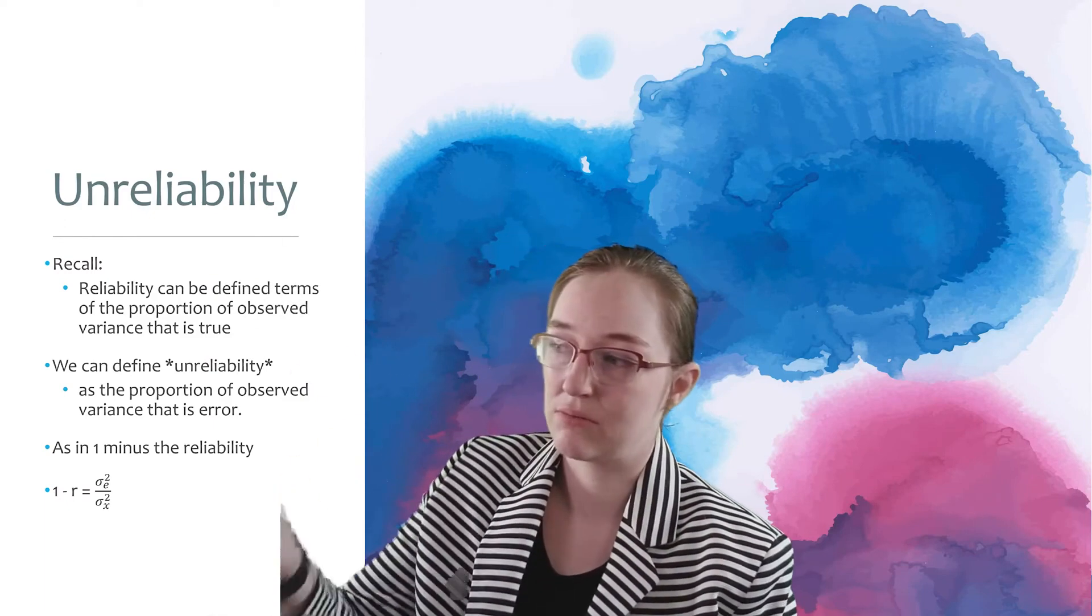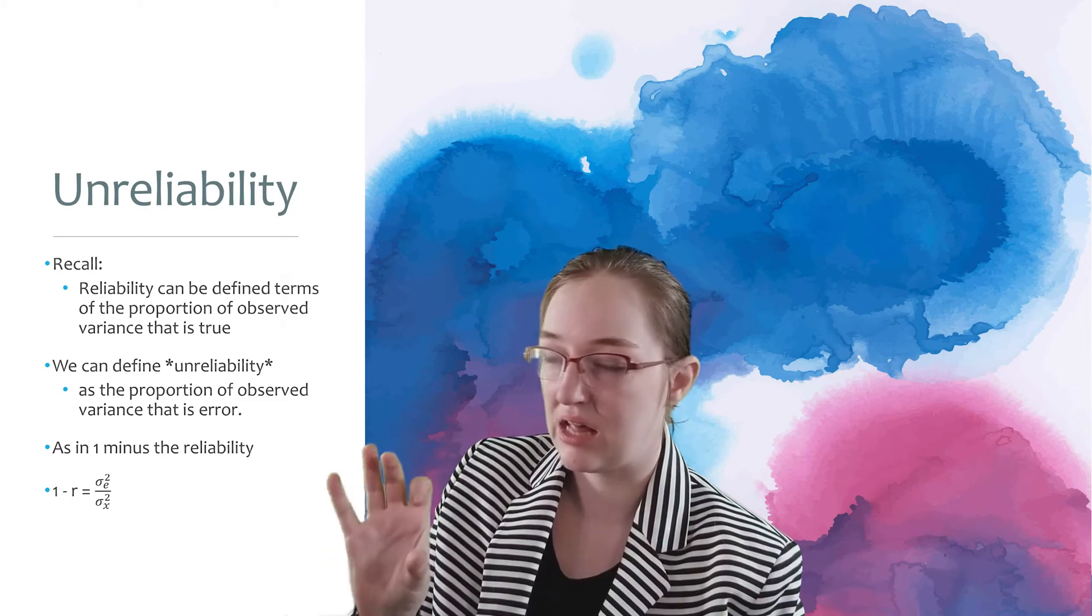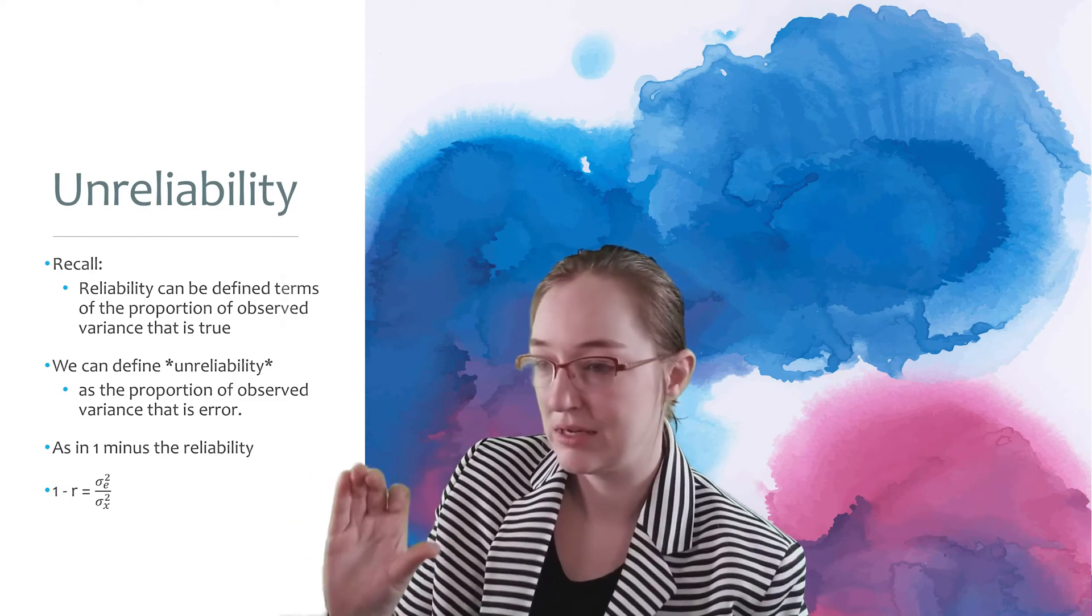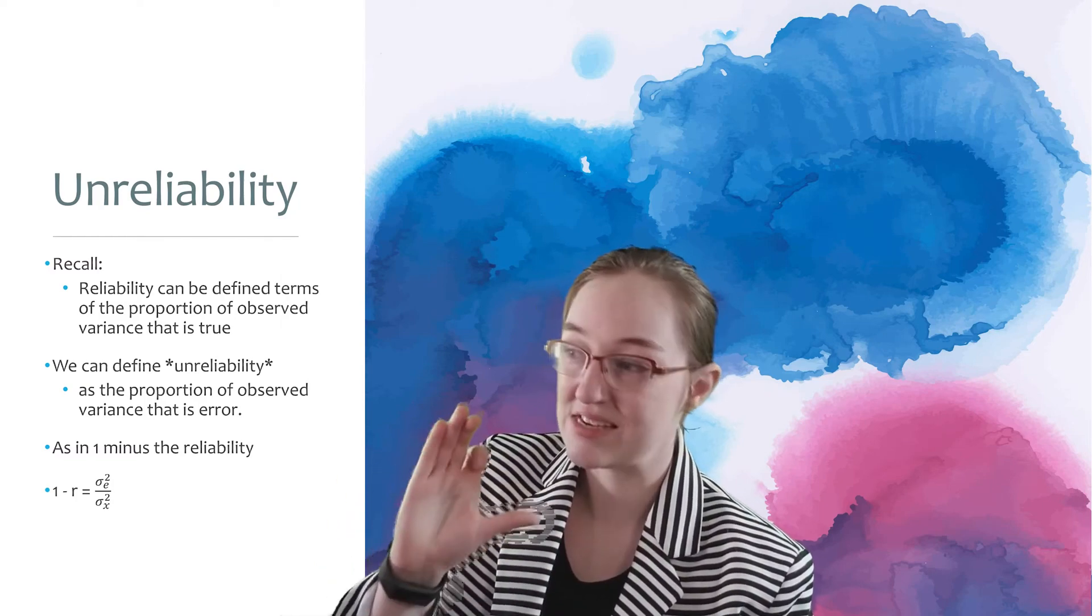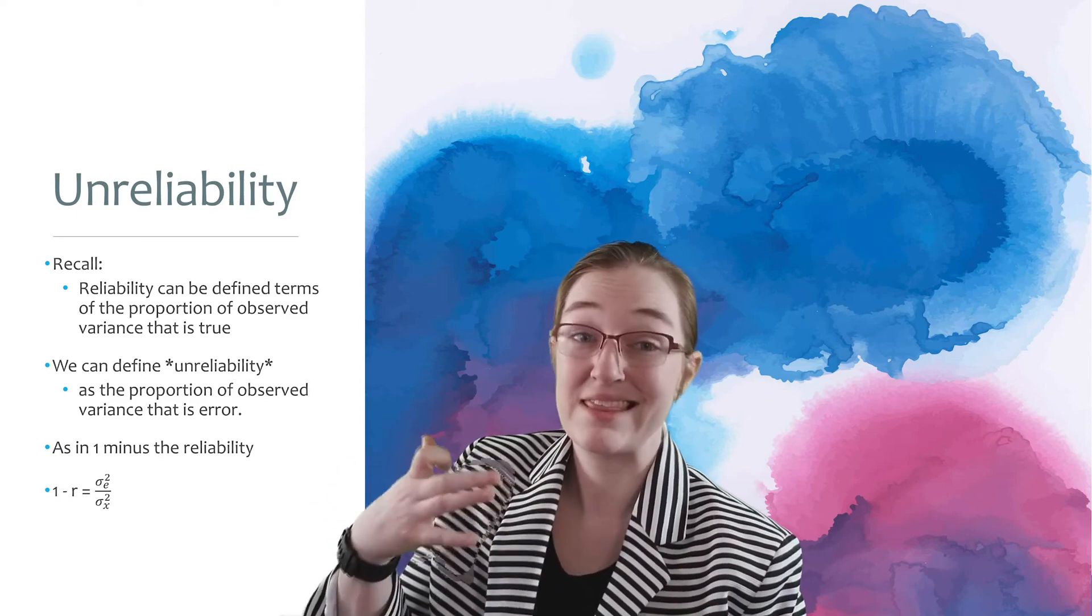So recall that reliability can be defined in terms of the proportion of observed variance that is true. So that means we can define unreliability as the proportion of observed variance that is error.